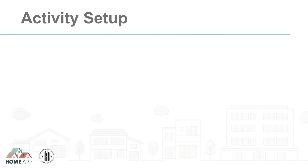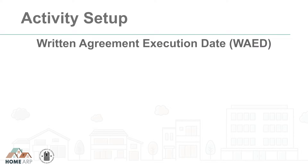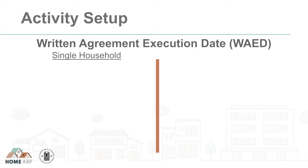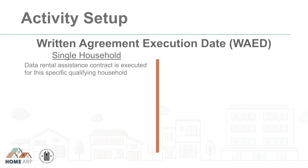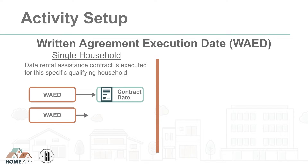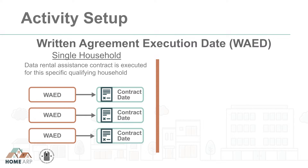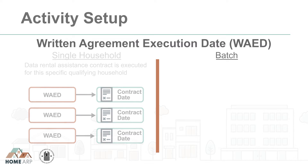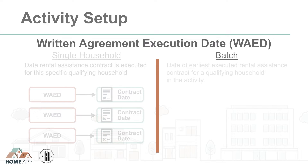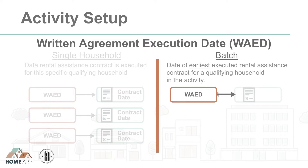The setup option the PJ decides to use will determine the date that will be entered into the Written Agreement Execution Date field in IDIS. If the PJ chooses the Single Household Setup option, it must enter the date the rental assistance contract was executed with that specific qualifying household as the written agreement execution date. If the PJ uses the Batch Setup option, the Written Agreement Execution Date is the date of the earliest executed rental assistance contract for a qualifying household included in this activity.